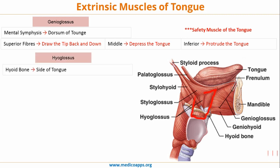The next muscle is the hyoglossus. As the name suggests, it starts from the hyoid bone and goes up to the side of the tongue. Because the hyoid is behind and below the tongue, on contraction it will cause depression and retraction of the tongue. So the action of hyoglossus is: it depresses and retracts the tongue.